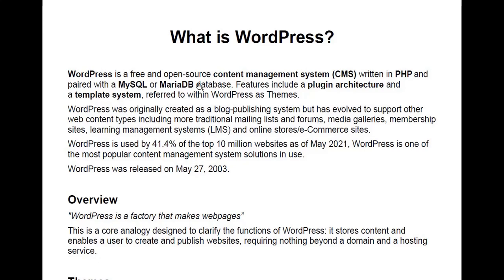Features include a plugin architecture and a template system referred to within WordPress as themes. WordPress was originally created as a blog publishing system but has evolved to support other web content types including traditional mailing lists and forums, media galleries, membership sites, learning management systems or LMS, and online stores or e-commerce sites.